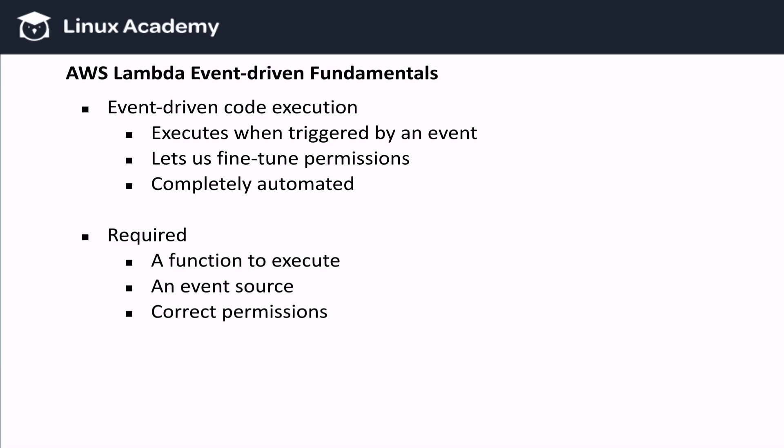For our event-driven code execution, we do need three things. First, we need a function to execute. Second, we need an event source. And third, we need correct permissions.